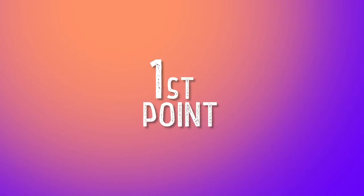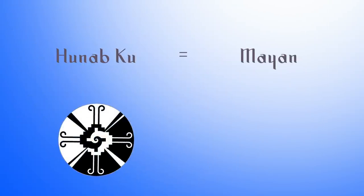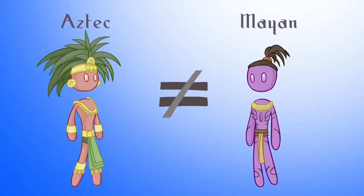First point: Hunabku might be a Mayan word, but the symbol that's used in New Age circles — you know, that weird circle squiggly thing — is actually Aztec, not Maya. And they're very different cultural groups.